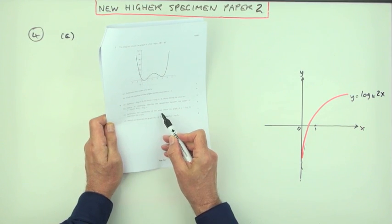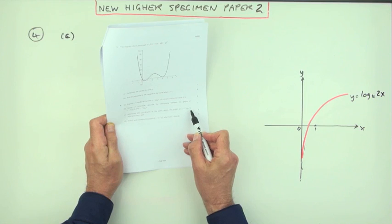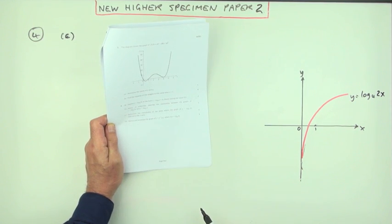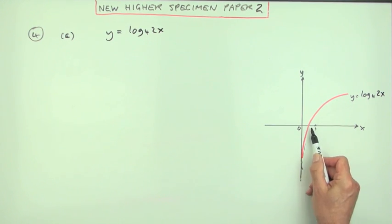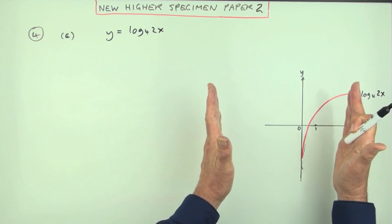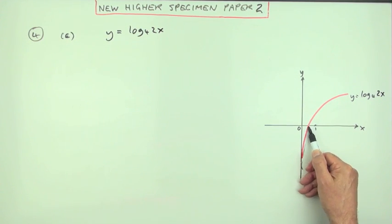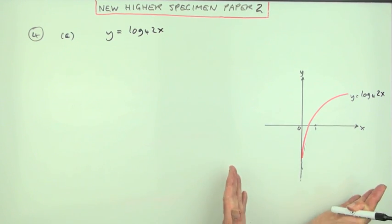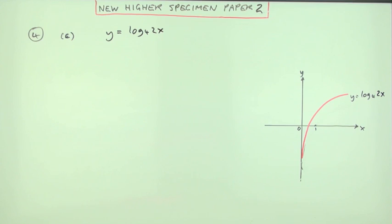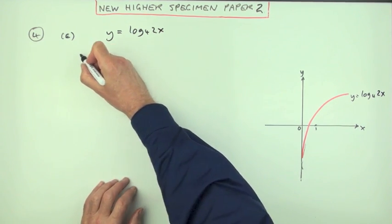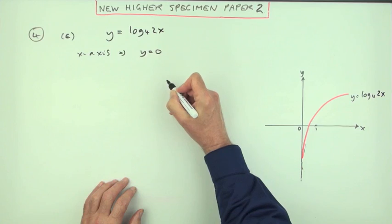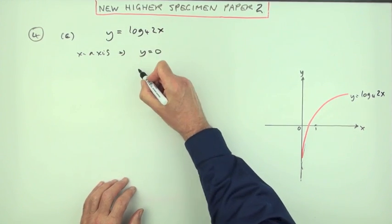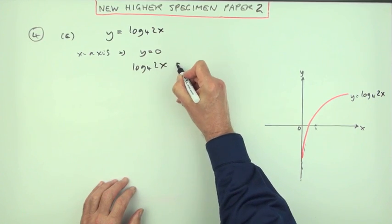Part C: determine the coordinates of the point where the graph of y equals log 4 of 2x intersects the x-axis. Here's that new graph. It'll cut the x-axis when y is 0.